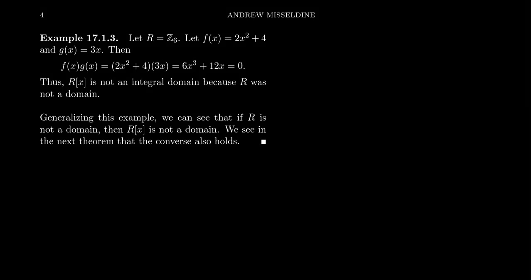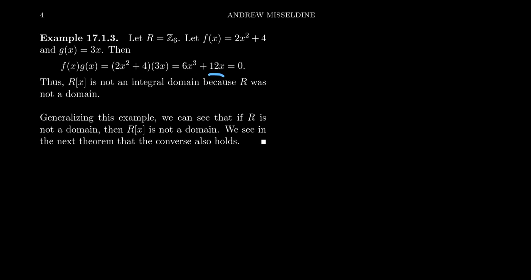Consider the following example of a polynomial ring. Let's take a ring whose coefficients are the integers mod 6 and consider two polynomials: f(x) = 2x² + 4 and g(x) = 3x. The product f(x)·g(x) = (2x² + 4)(3x). Distributing, we get 6x³ + 12x. Since we are working mod 6, both coefficients are 0, and thus the product is the zero polynomial. So f(x)·g(x) = 0.